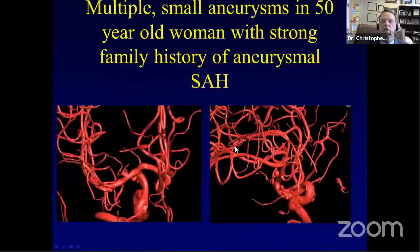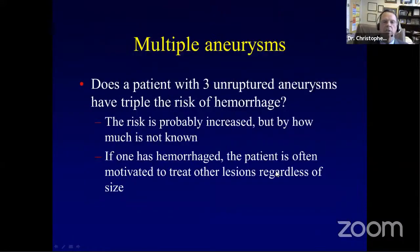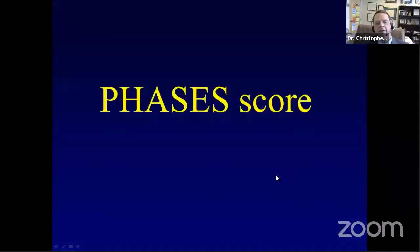A 2019 New York meta-analysis looking at size versus rupture presentation found that over time — from 1991 through 2016 — the proportion of SAH presentations with lesions smaller than 5 mm is increasing, with 84% of recent cases being less than 10 mm at presentation. Multiple aneurysms are another consideration. A 50-year-old woman with a strong family history may have three or four aneurysms. Her rupture risk is not triple that of a single aneurysm patient, but is probably increased — by how much is unknown.